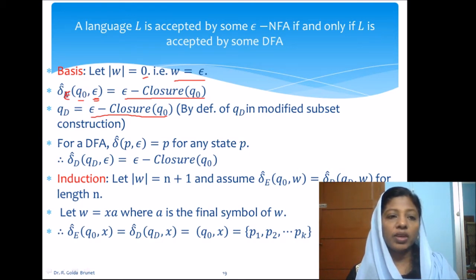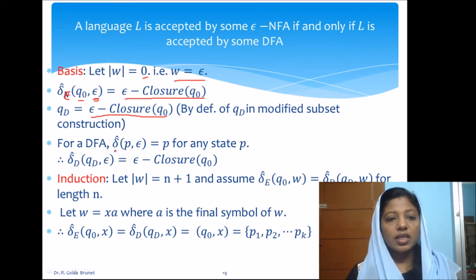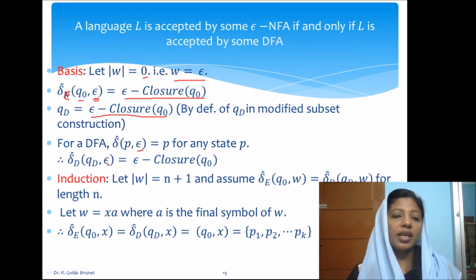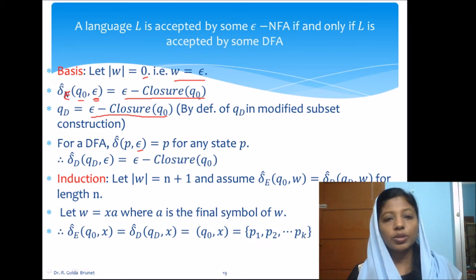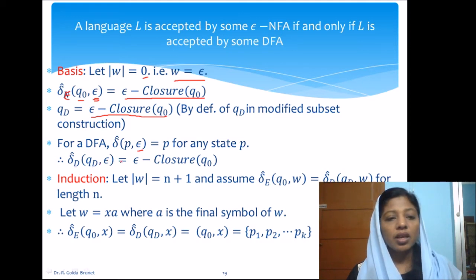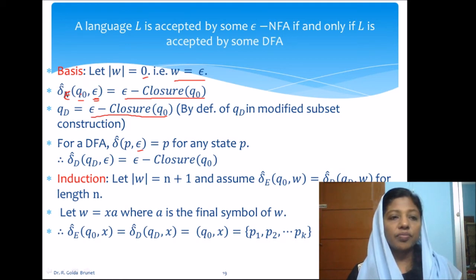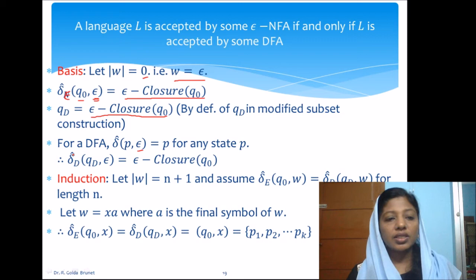Therefore, we have established that delta-cap of E from Q naught upon epsilon equals the epsilon-closure of Q naught, and Qd is also that — when we start from Qd and accept epsilon, the result is Qd, which is the epsilon-closure of Q naught. So we have established that the extended transition of the ENFA starting from Q naught and accepting epsilon is the same as the extended transition of the DFA starting from Qd and accepting epsilon. The basis case is proved.